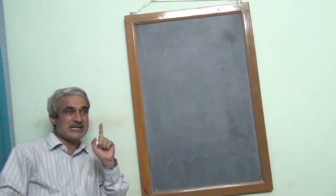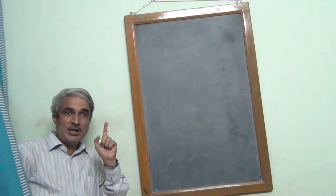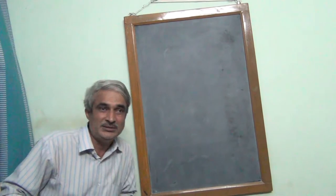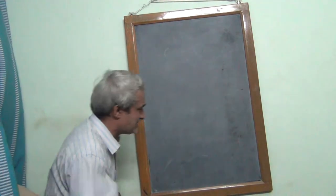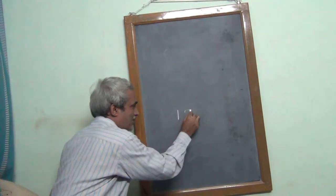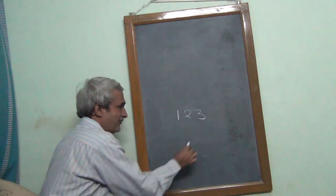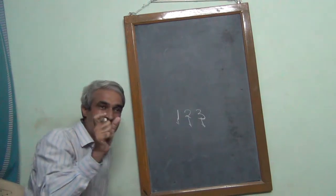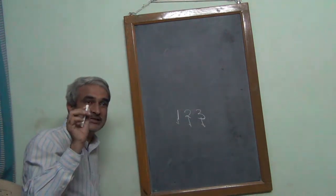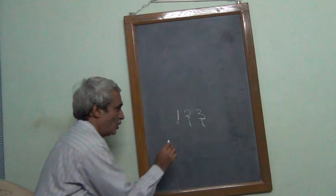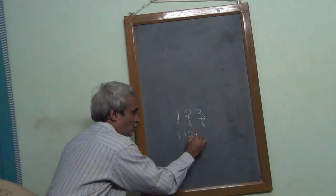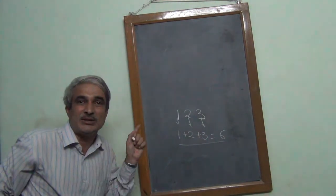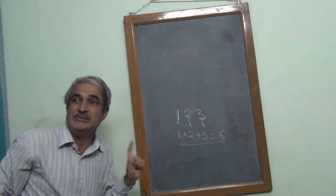Today, this is the second exercise based on the first experiment. The first exercise involved the number 123 — we extracted each digit and found the sum of all digits in a given integer, which equals 1 plus 2 plus 3, equal to 6. Today is the second exercise, simpler than yesterday.